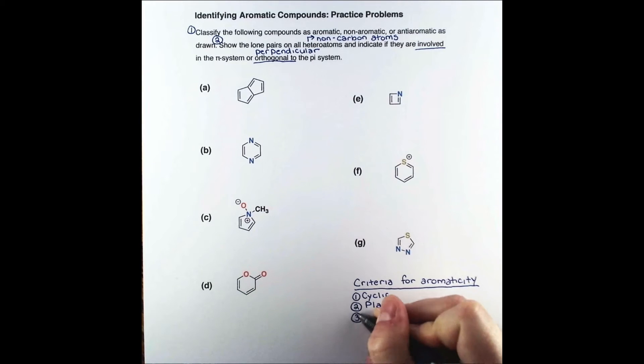The compound must also be conjugated. The continuous pi system within the ring can be made up of sp2 hybridized atoms and lone pairs. Finally, the number of electrons in the pi system must satisfy Huckel's rule, having 4n plus 2 pi electrons. I'll abbreviate electrons E minus.